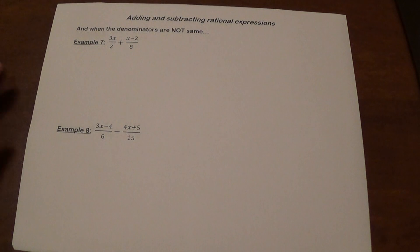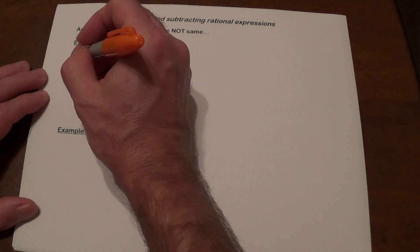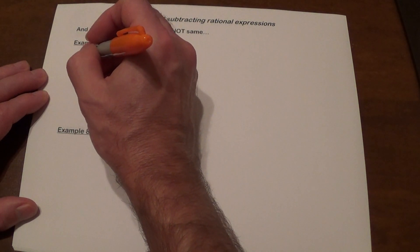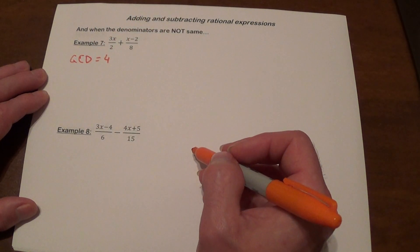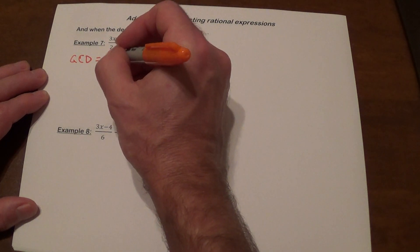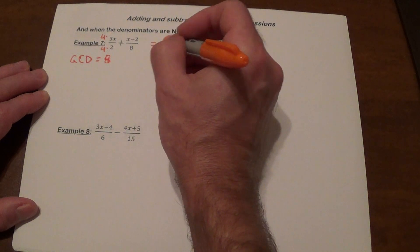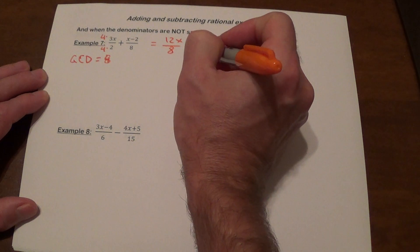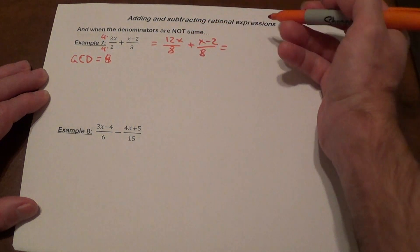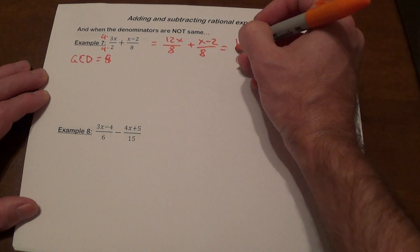Now we'll take a look at problems where the denominators are not the same. We need to find the greatest common denominator. Here it's going to be 8, so we're going to multiply the first fraction by 4. That gives us 12x over 8 plus x minus 2 divided by 8. Combining the numerators, that's going to be 13x minus 2 divided by 8.